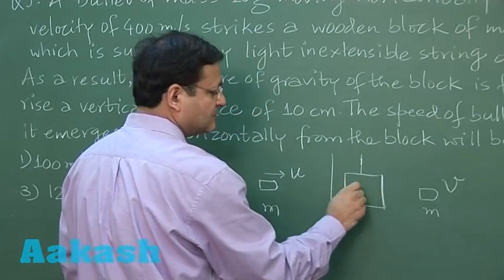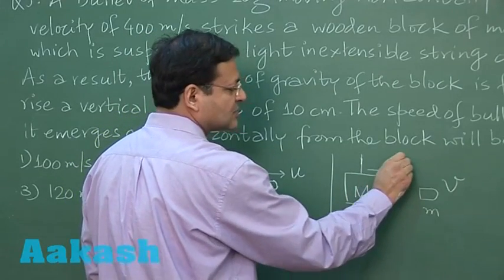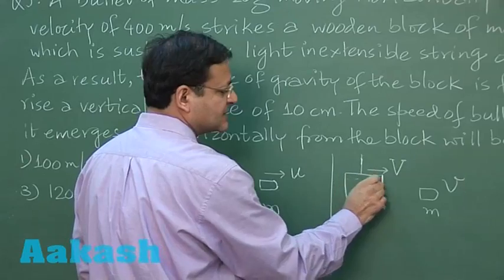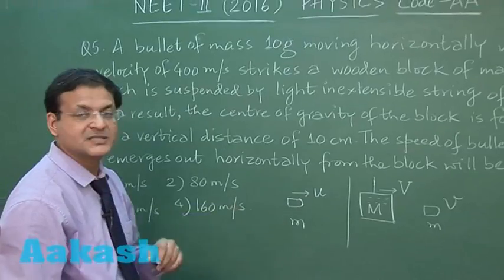So this wooden block which is very massive also must have started off with some initial velocity. I am calling it capital V, and this bullet must have penetrated through that. So this is a kind of question in which you have to balance the momentum.